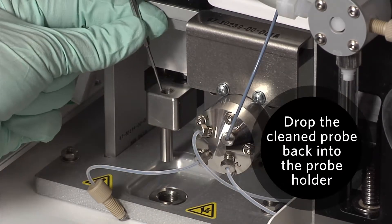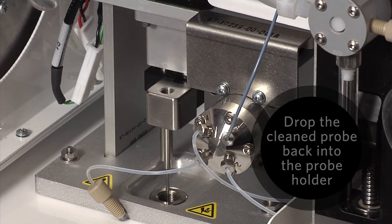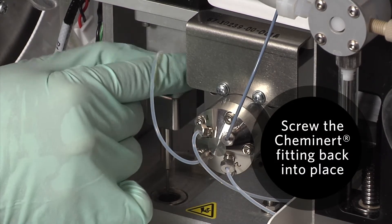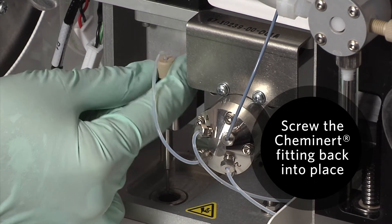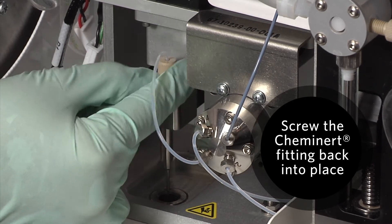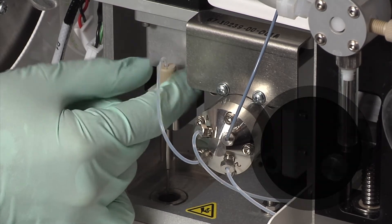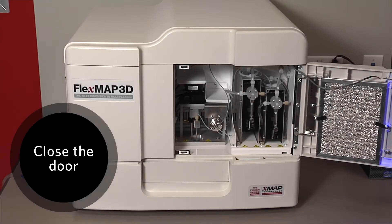After the probe is cleaned, drop it back into the probe holder, tightly screw the Kim Inert fitting back into place, and close the instrument.